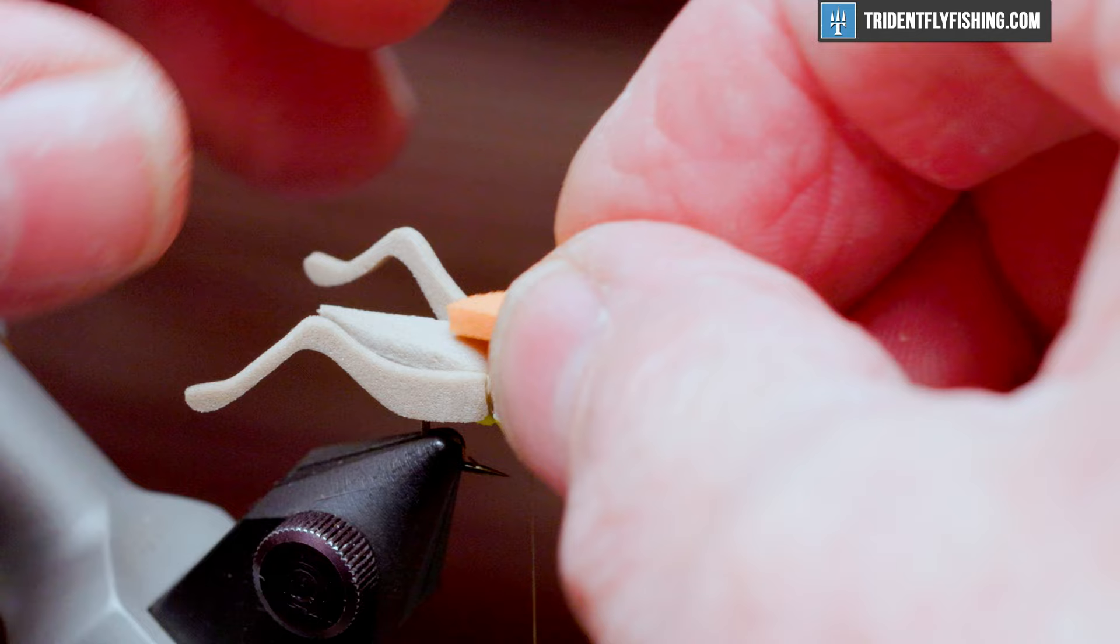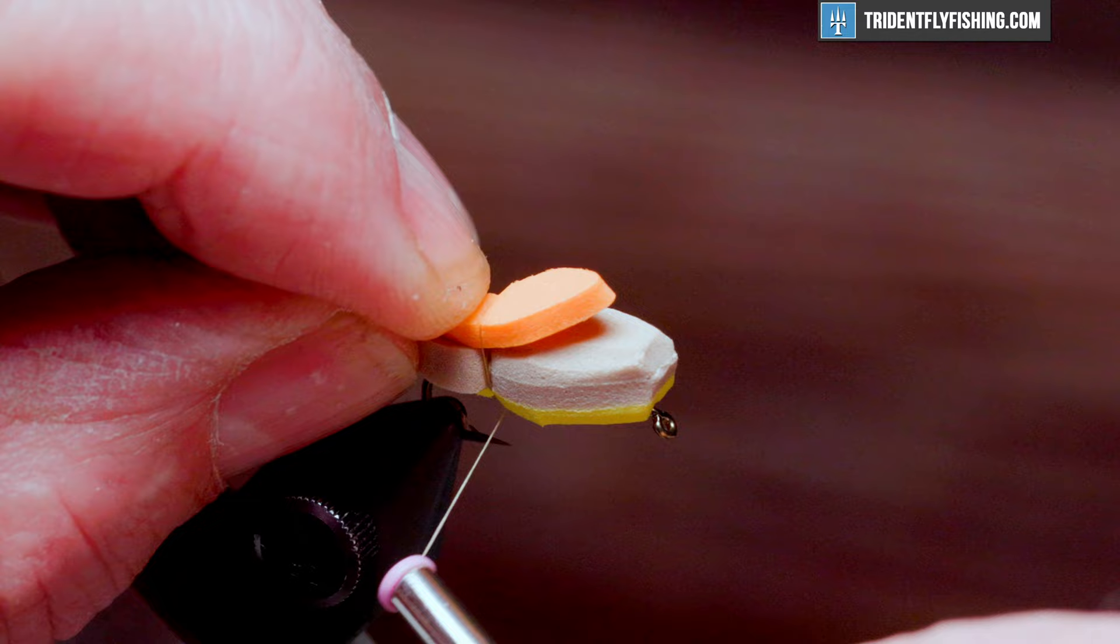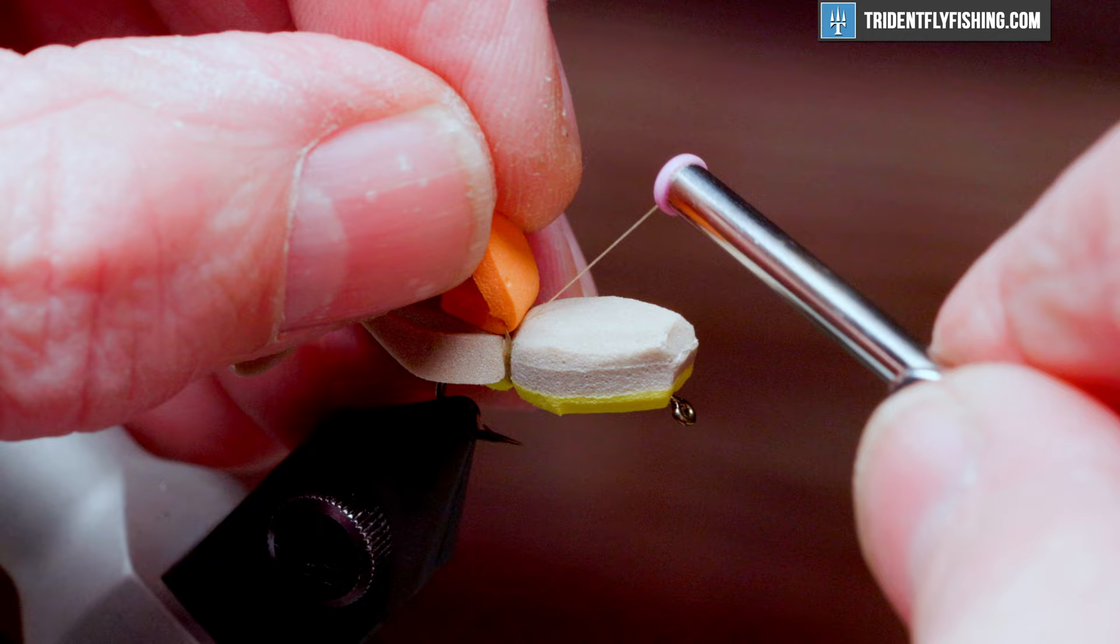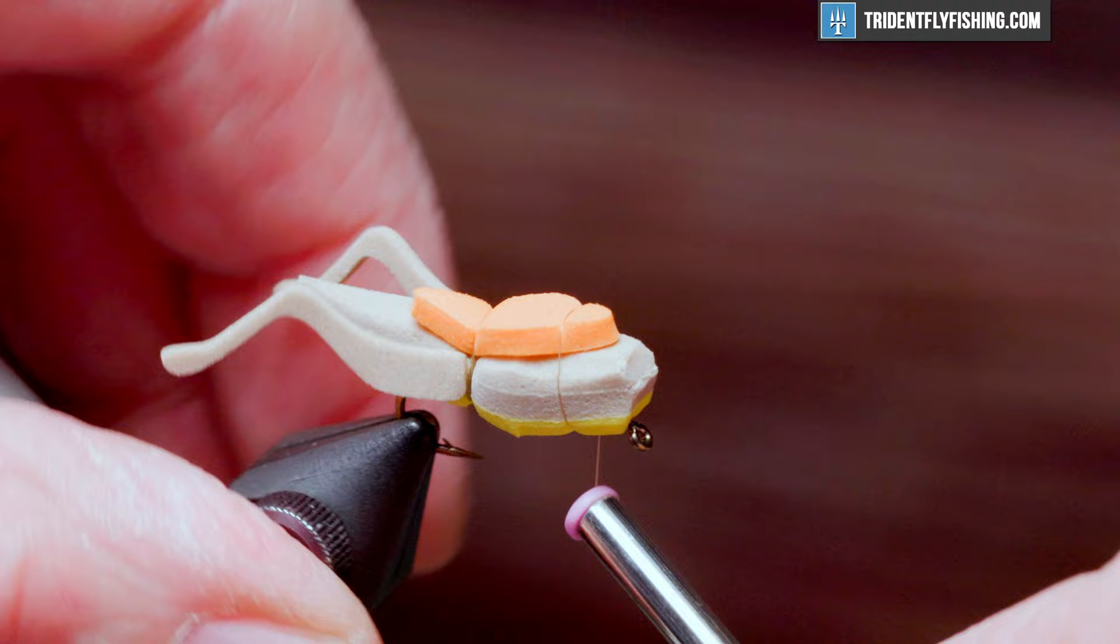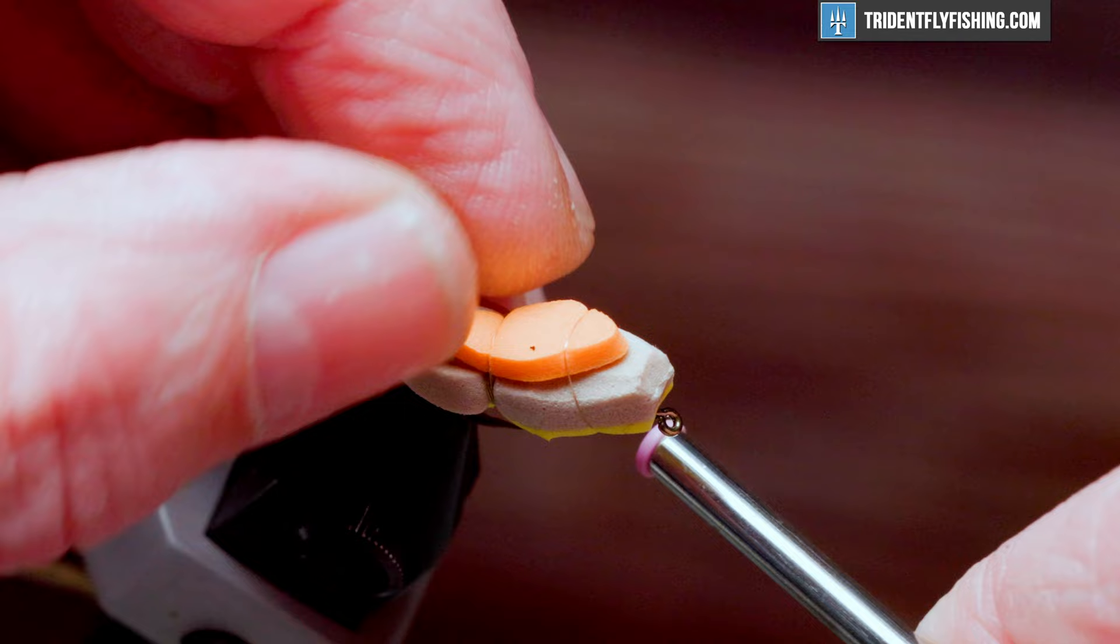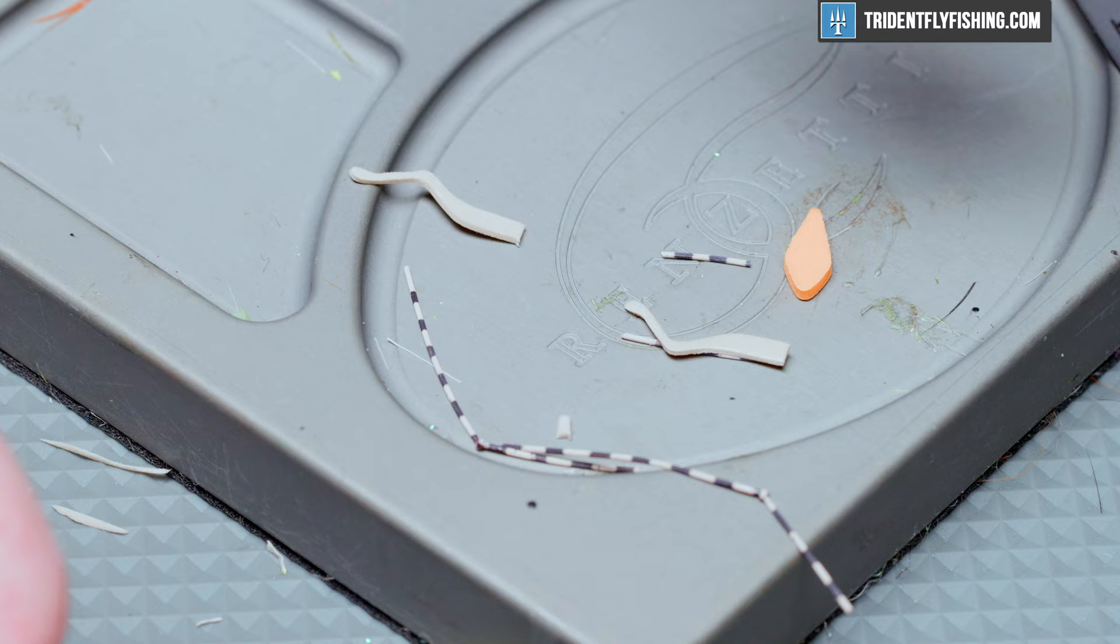And next we're going to tie in the indicator, which I've already cut out. Going to sit right on top, just a little bit back from the head. A couple of turns is all you need to hold it in place. And then we're going to run our thread back up across the top of the fly. And that will be hidden by the indicator. And this will form the head of the fly. There we go.